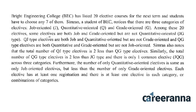Furthermore, the number of only quantitative oriented electives is the same as only job oriented electives, but less than the number of only grade oriented electives. Each elective has at least one registration and there is at least one elective in each category or combination of categories.